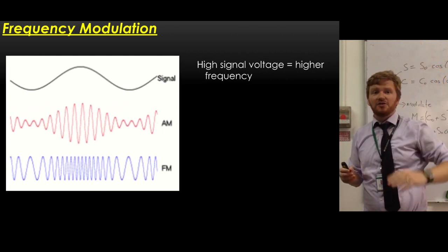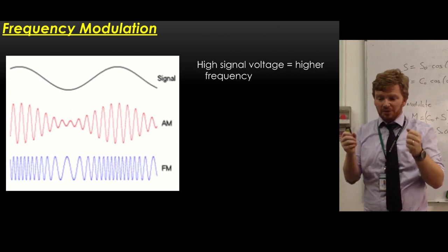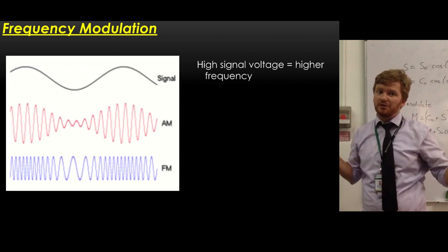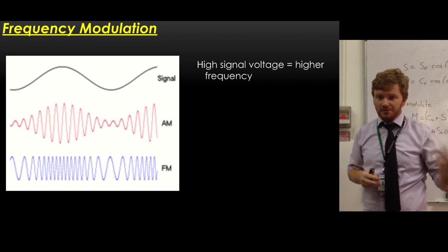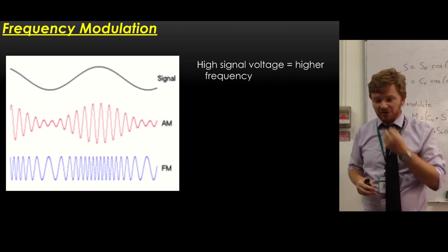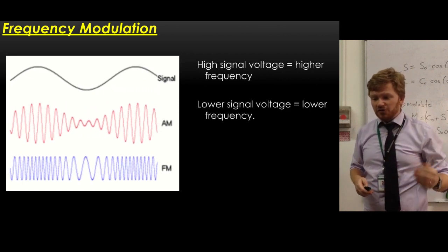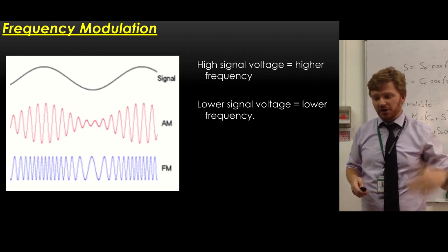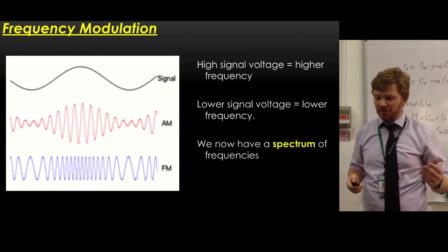If I have a high input signal, I end up with a very high frequency. If I have a low input signal, I end up with a very low modulated frequency. So yeah, high signal, high frequency, low signal, low frequency. Pretty simple.